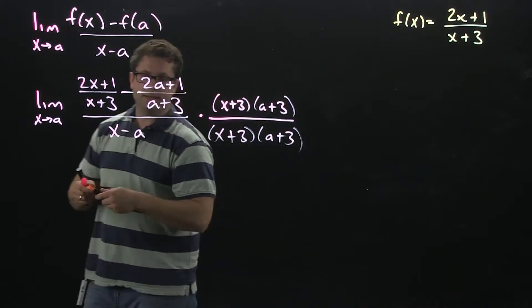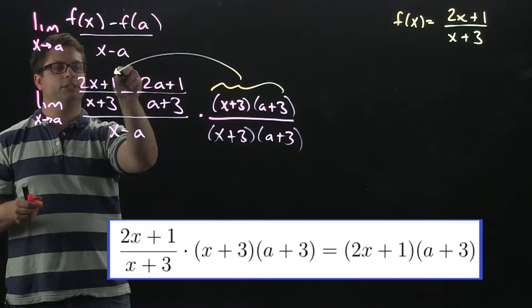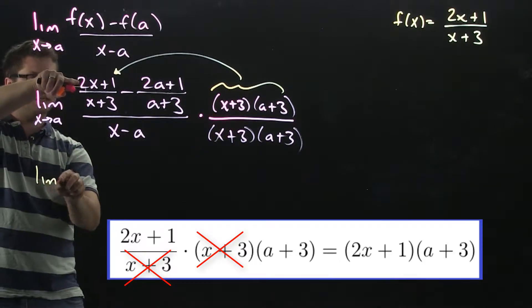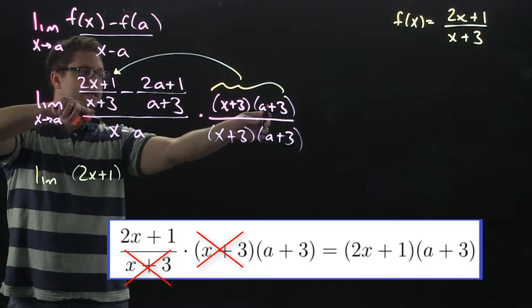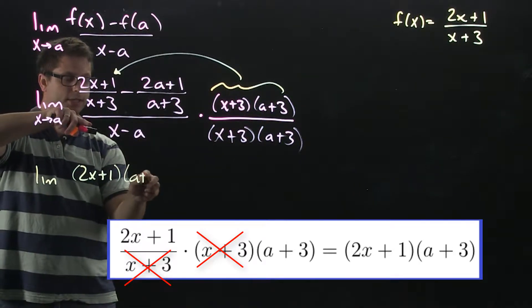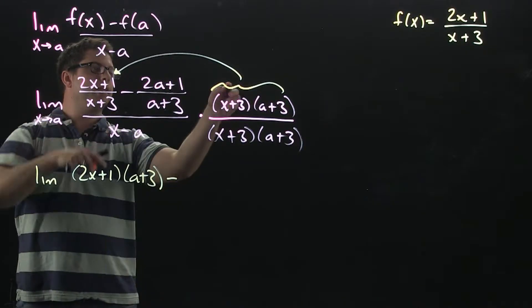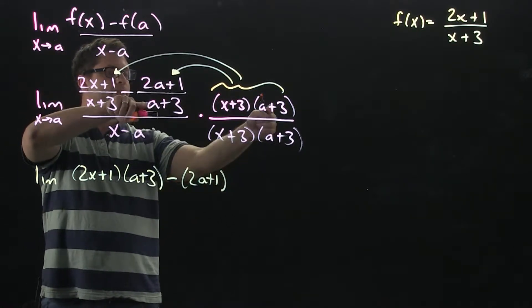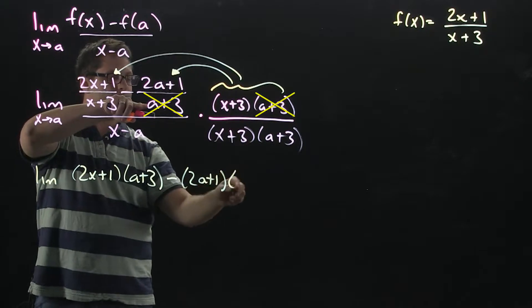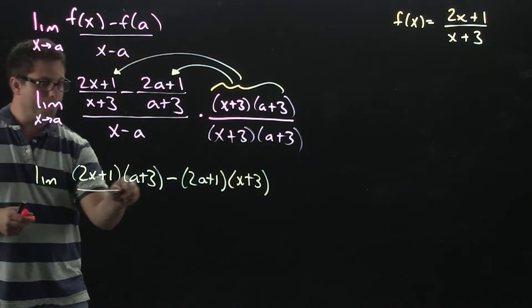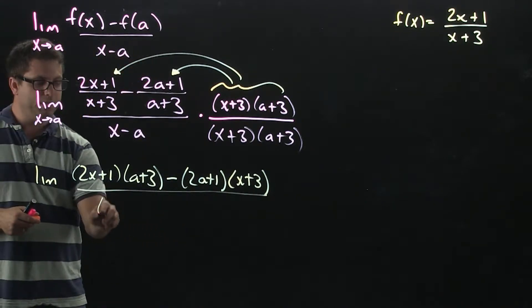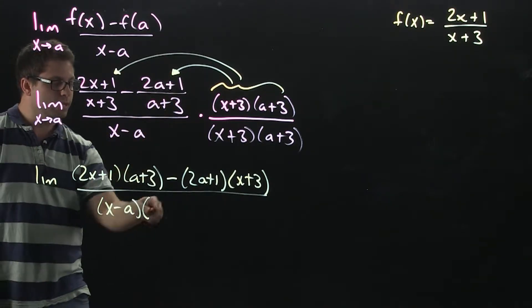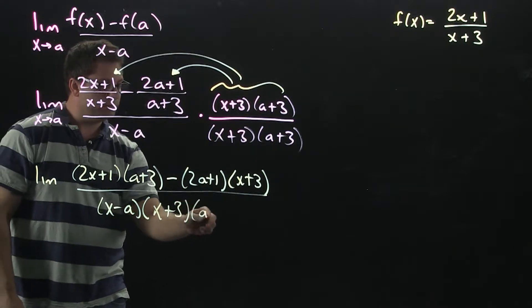Now, when I multiply this onto this fraction here, you'll see that the x plus 3s will cancel. So, what's going to be left is the 2x plus 1 and the a plus 3, because that's not going to cancel with anything. Minus. And then when you multiply this on to the second fraction, the 2a plus 1 will stay. The a plus 3s will cancel, but that x plus 3 is going to stay. Now, on the bottom, you are going to just leave the x minus a alone, because the whole point is to somehow factor an x minus a from the numerator to cancel with this one.